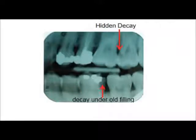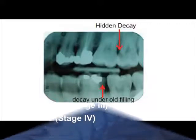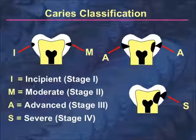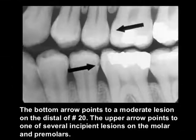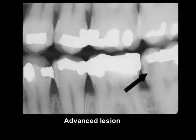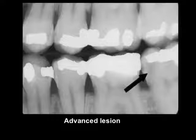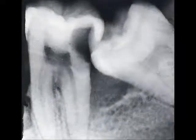Bitewing radiographs are also used to detect suspected secondary caries under old restorations. In radiographic evaluation of dental caries: incipient interproximal caries extends less than halfway through the thickness of the enamel; moderate interproximal caries extends more than halfway through the enamel but does not extend through the dentine more than half the distance towards the pulp; severe interproximal caries extends through the enamel and dentine, more than half the distance towards the pulp, and may appear clinically as cavitation into the tooth.